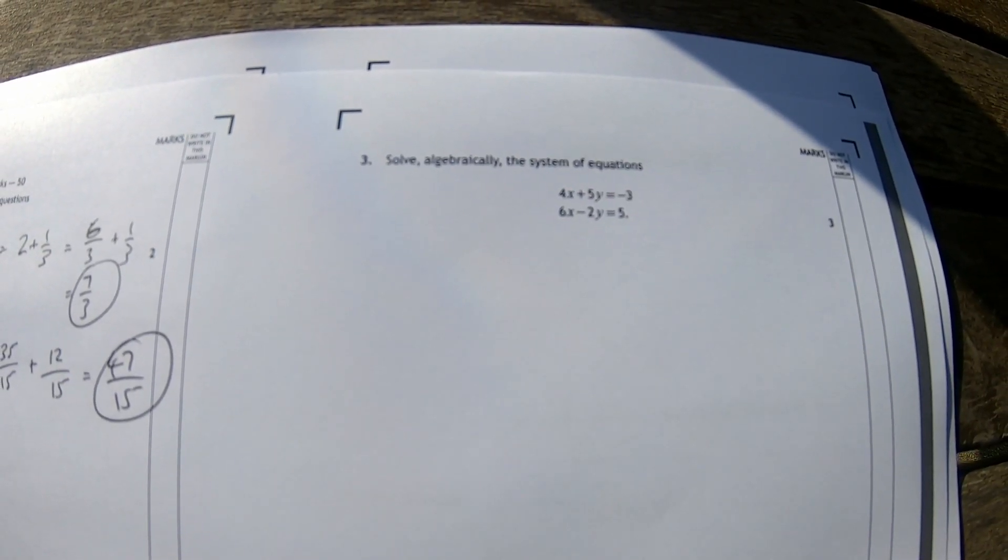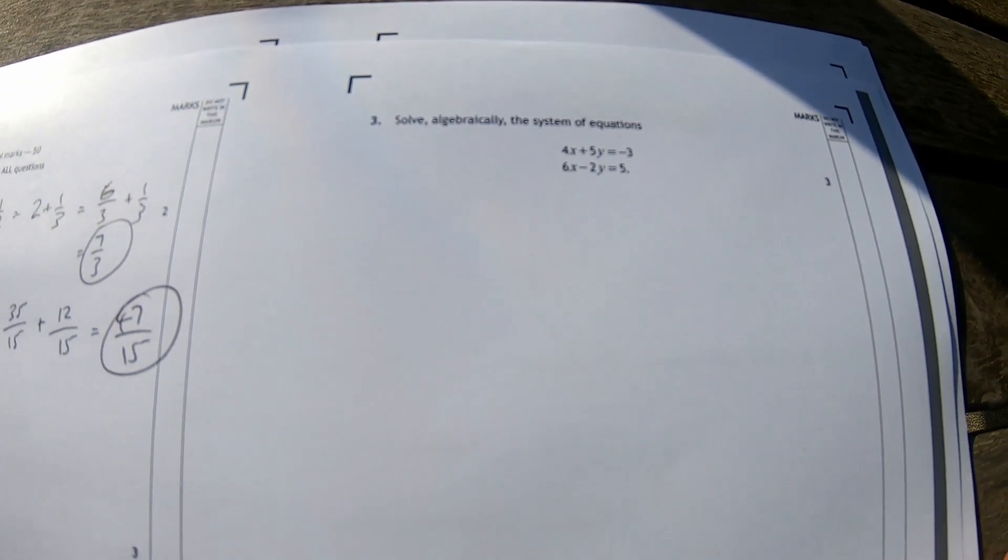Solve algebraically the system of equations x and y simultaneous equations. This is great because we do these all the time in chemistry. We try to eliminate the number of electrons from half equations to make an overall redox equation. This should be fun.